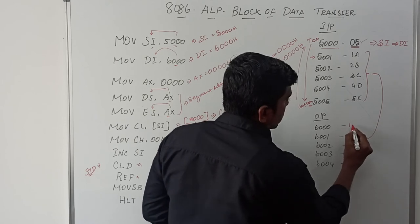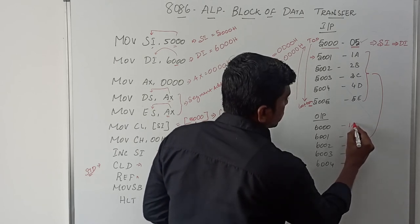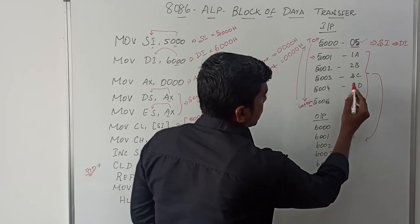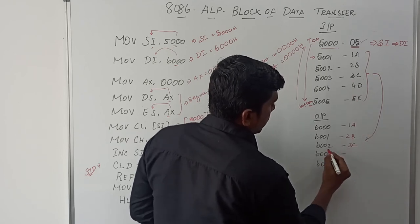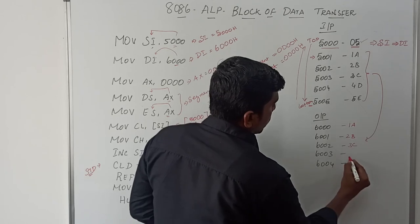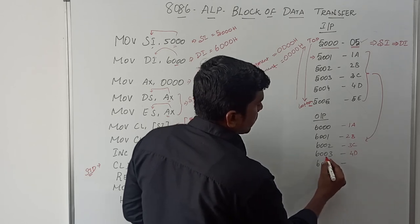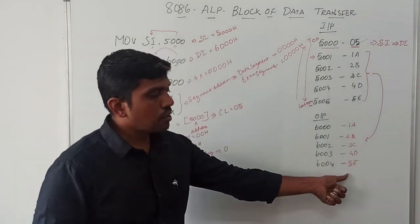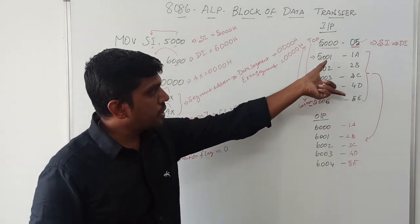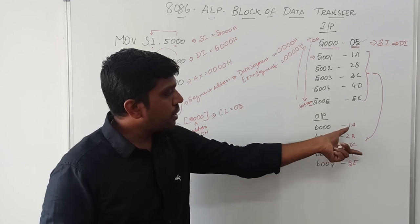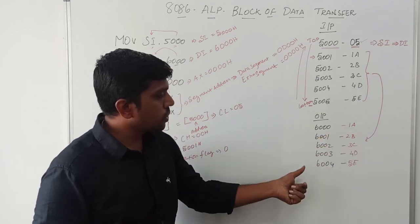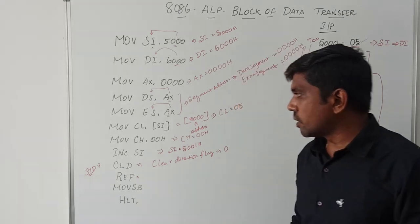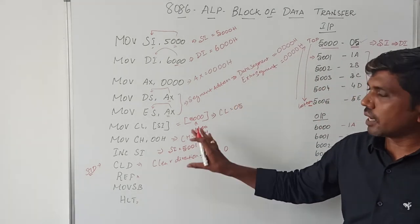So 1A is transferred to memory location 6000H, 2B is stored at 6001H, 3C is stored at 6002H, 4D is stored at 6003H, and 5E is stored at 6004H. After transferring all 5 data values, the final instruction is HLT, which represents the end of the program.